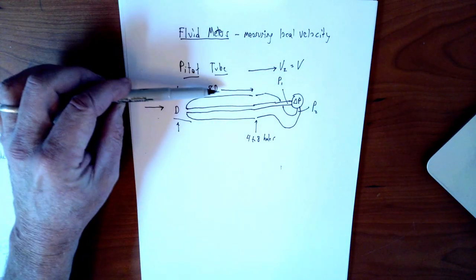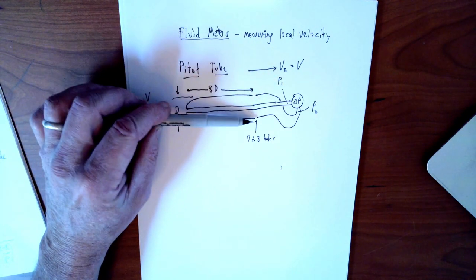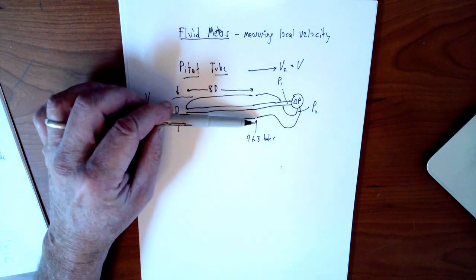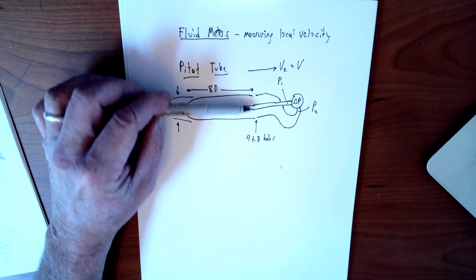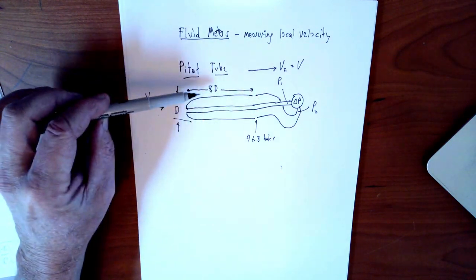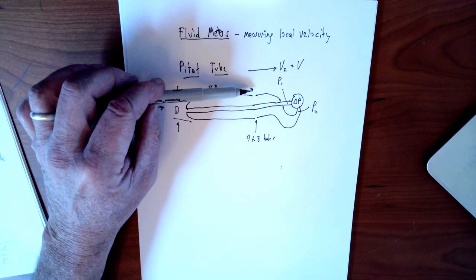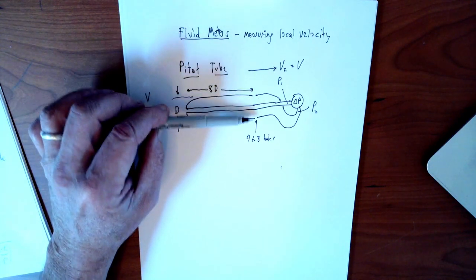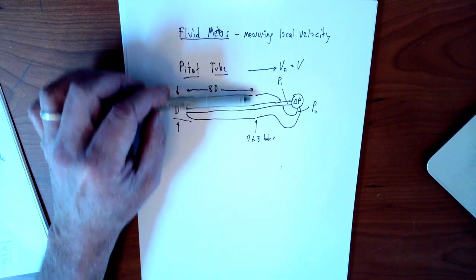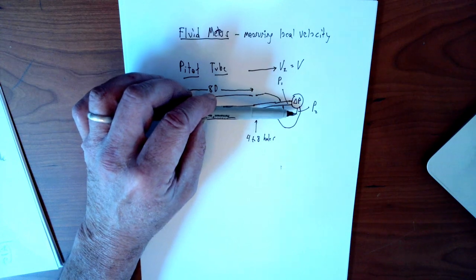P1 here will be higher due to the dynamic pressure. And velocity 2 up here is the flow passing over these holes. The Pitot tube will typically have four to eight holes separated eight diameters back from the entrance, and those holes will be measuring the static pressure. So that will be the pressure 2 here.